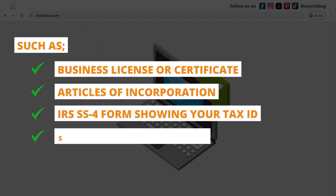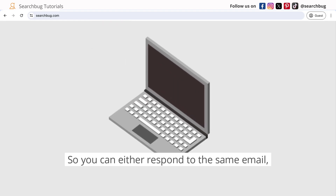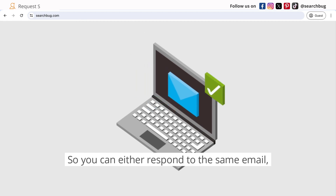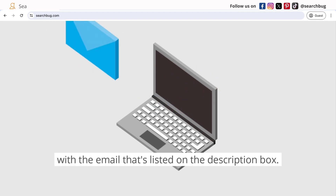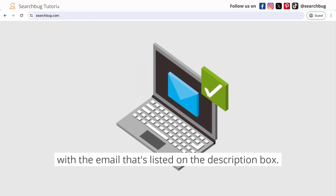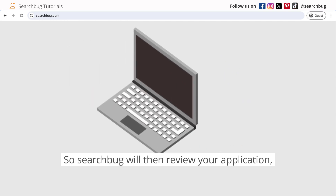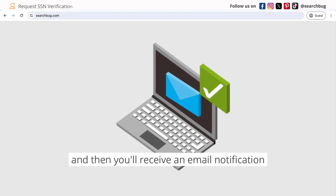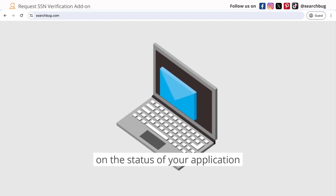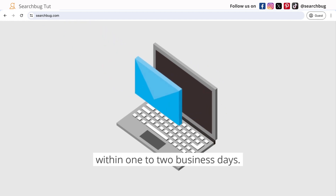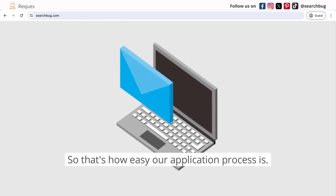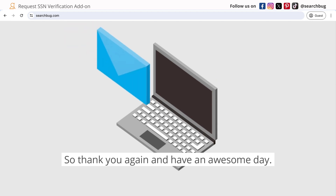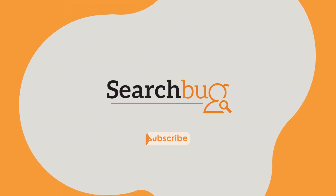You may also be required to submit a selfie with your photo ID. You can either respond to the confirmation email or send us an email at the address listed in the description box. SearchBug will then review your application and you'll receive an email notification on the status of your application within one to two business days. That's how easy the application process is — thank you and have an awesome day!